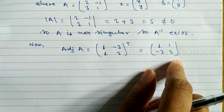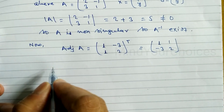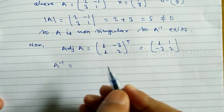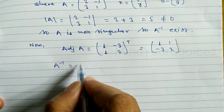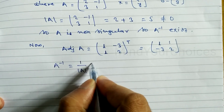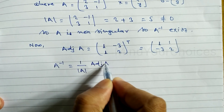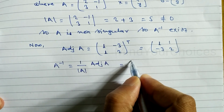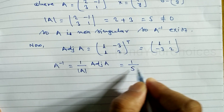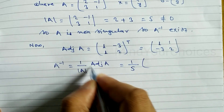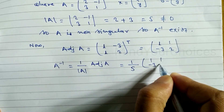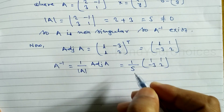Finally, we have to find A inverse. A inverse equals 1 divided by the determinant of A, multiplied by the adjoint of A. The determinant is 5, and the adjoint is [1, 1; -3, 2]. So A inverse equals (1/5) × [1, 1; -3, 2].